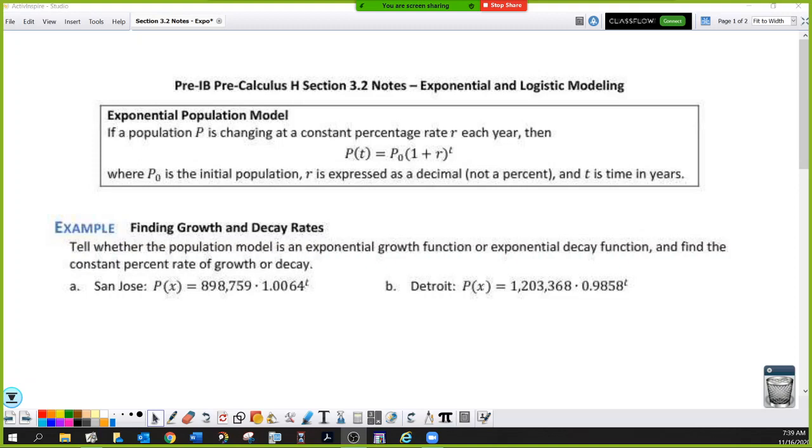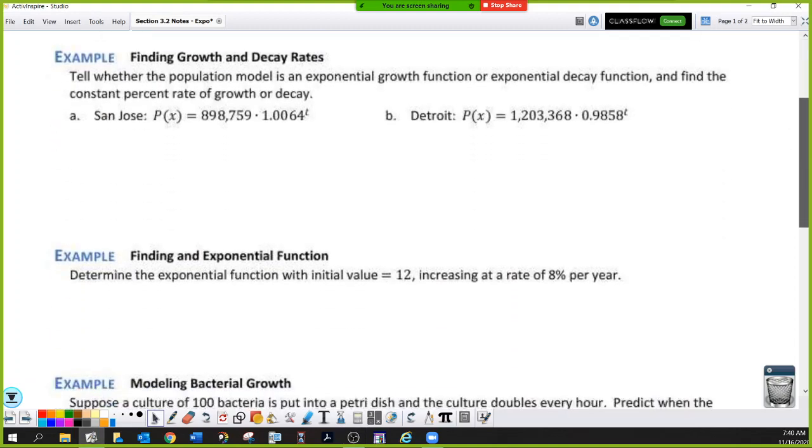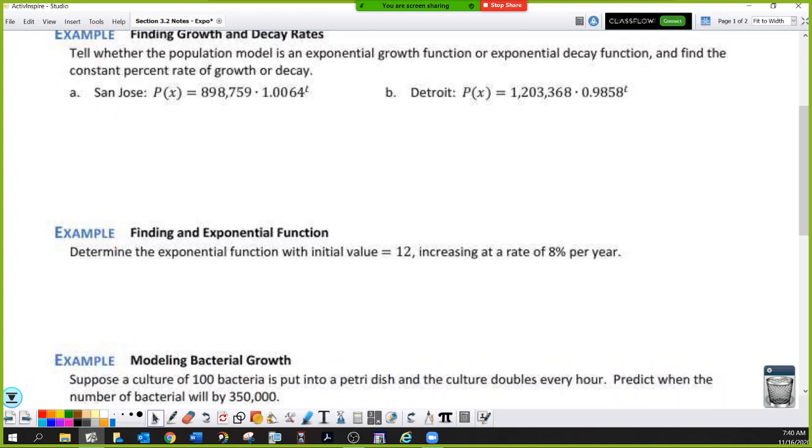Alright, let's find some exponential growth and decay rates. So tell whether the population model is growth or decay, and then find the percent rate of growth or decay. So basically, is it growth or decay, and then solve for R. And it wants it as a percent.